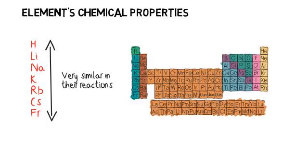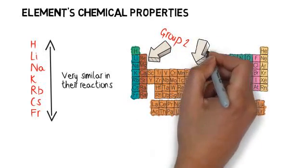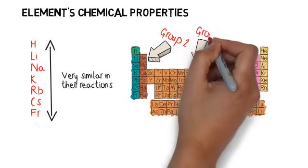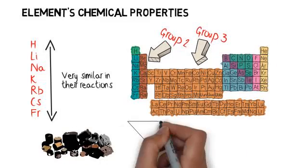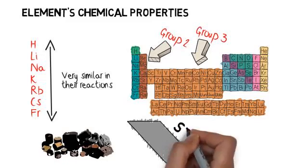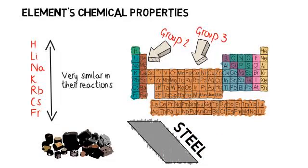The transition metals are located between group 2 and 3 and form the bulk of the periodic table. They are mostly used to make a wide range of compounds such as metal alloys and form colored compounds as well. The most common alloy is steel and that's a mixture of carbon, iron, and nickel.